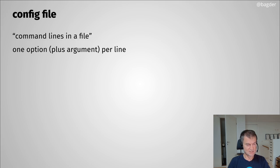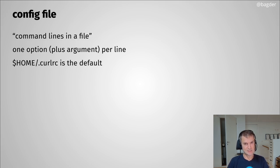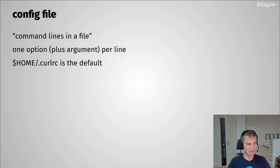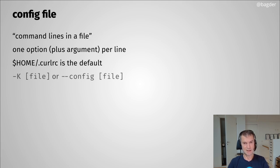Curl even tries to use a default config file if it's there, called .curlrc, using the HOME environment variable. There's actually an entire path it tries to find this in — you can use it in a few other places as well. You can check that out in the man page.